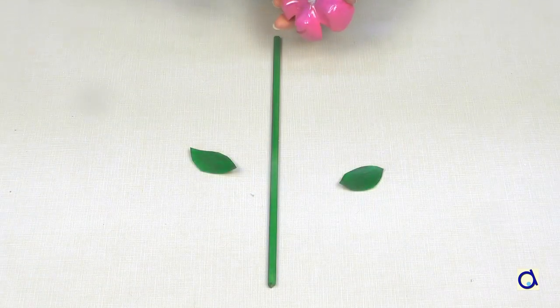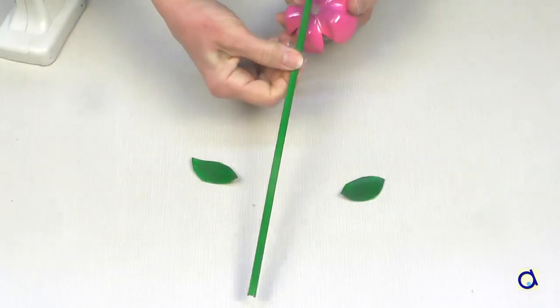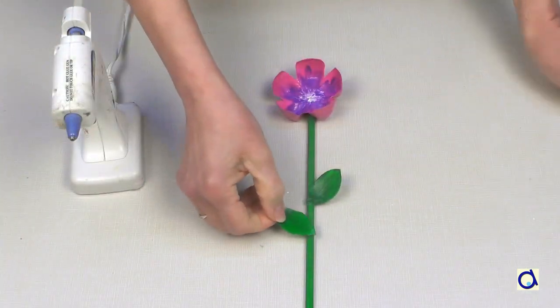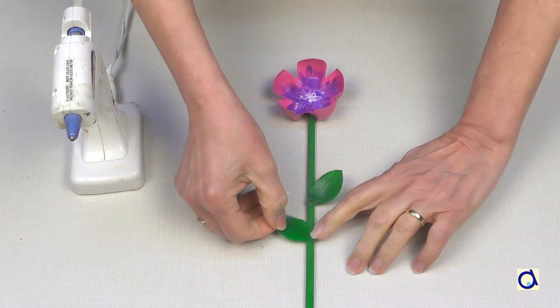Glue the flower to the stem with hot glue. Then glue the leaves on the stem. So there you have two models of flowers.